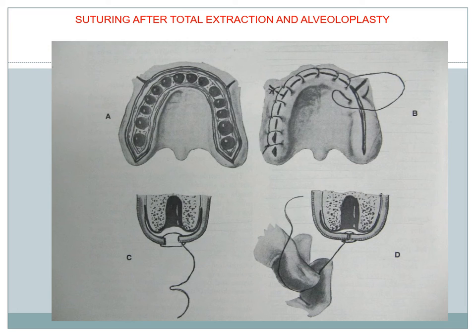The main thing after alveoloplasty is that we always use a continuous locking type of suture — only then do we get uniform tension. Otherwise, what will happen is that some areas will have inverted margins that will create flabby tissue, which will then require another surgical procedure. So uniform tension is essential for multiple extraction alveoloplasty.